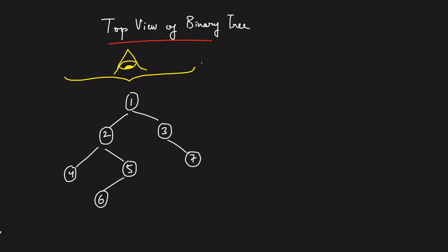Hey everyone, welcome back to the channel. Today we will be discussing the top view of a binary tree from the FreeCut3 series. Assume this binary tree is given to you and you're looking from the topmost level — the tree is entirely in 1D. Looking from left to right, the top view is: 4, 2, 1, 3, 7. So I want you to deduce an algorithm that gives the top view of any given binary tree.